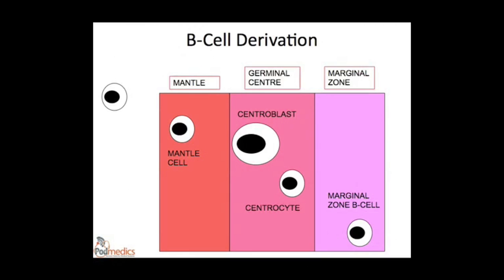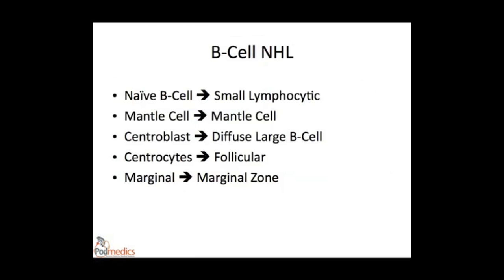Malignant change is quite common in this situation, as there is a lot of somatic hypermutation and genetic instability, and each of these cells can become malignant. If a naive B lymphocyte becomes malignant, it forms a small lymphocytic lymphoma. Mantle cells form mantle cell lymphomas. Centroblasts, because they're large, cause diffuse large B cell lymphoma. Centrocytes form follicular lymphoma. Marginal zone B cells form marginal zone lymphoma. And plasma cells, obviously, give rise to myeloma, which we'll talk about later.